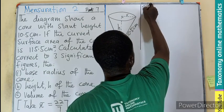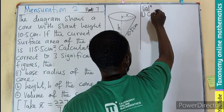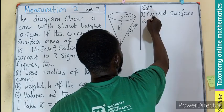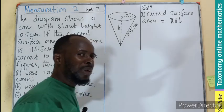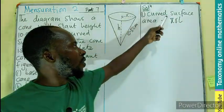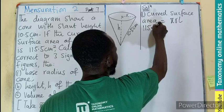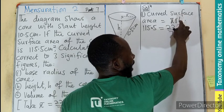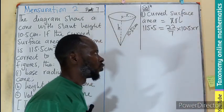Solution. Curved surface area, which is number one. Area of a cone is given by πRL, that is the curved surface area, where R is the radius we are looking for and L is the slant height. So per substitution, 115.5 equals 22/7 times R times L. So let's take the L first, then bring the R attached to it.